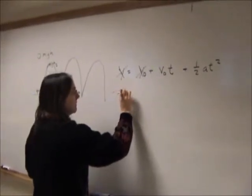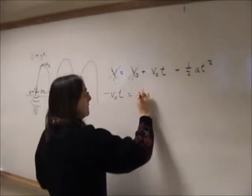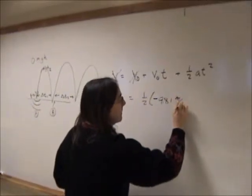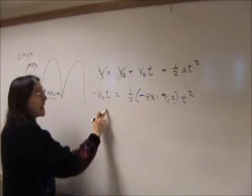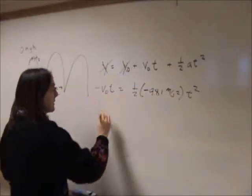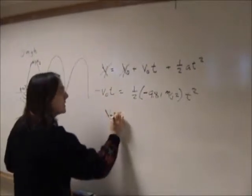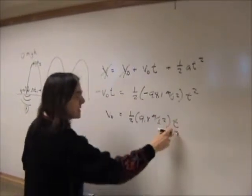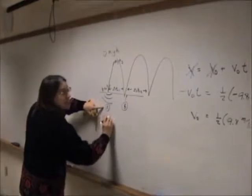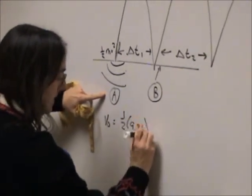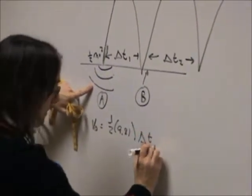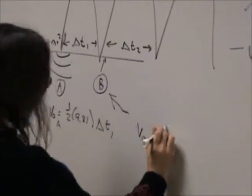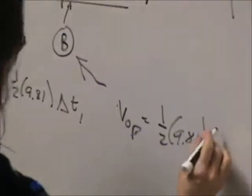and the speed must equal the acceleration due to gravity times time squared. I can take a time out from the equation, cancel the minus sign, and I get the velocity at point A or B is equal to one-half times 9.8 meters per second squared times the time between the bounce. Velocity V0 at point B is equal to one-half times 9.81 times delta T1, and the velocity here, V0 at point B is going to equal one-half times 9.81 times delta T2.